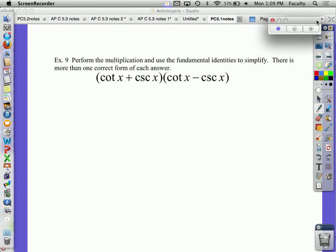Example 9. It says perform the multiplication and use the fundamental identities to simplify. So the first thing I'm going to do is multiply, so we're going to do FOIL.